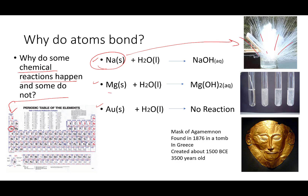If you take magnesium from the alkaline earth metals, group two, it will react with water much more slowly. You can increase the speed of the reaction by adding a little heat to it, but slowly over time you can make it react and it will produce magnesium hydroxide, which is basically milk of magnesia produced the slow way.